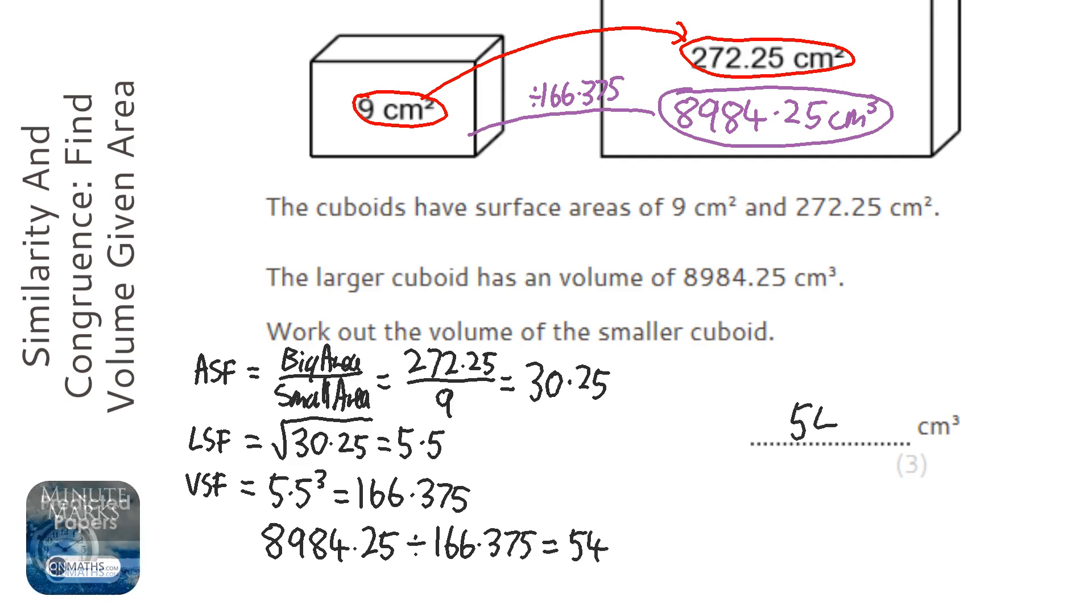So the volume of the smaller cuboid is 54, and just check that it's smaller, because obviously the cuboid's smaller, and 54 is a lot smaller than a number close to 9,000. So we know we probably got it right, and this is correct.